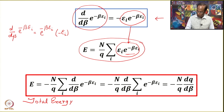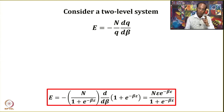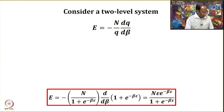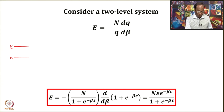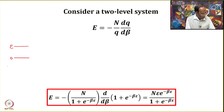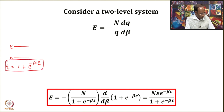Let us now apply this expression to a two-level system. From the beginning we have taken many examples of two-level and three-level systems. In a two-level system there is a ground state at energy 0 and a first excited state at energy ε. The partition function for this two-level system is q = 1 + exp(−βε).